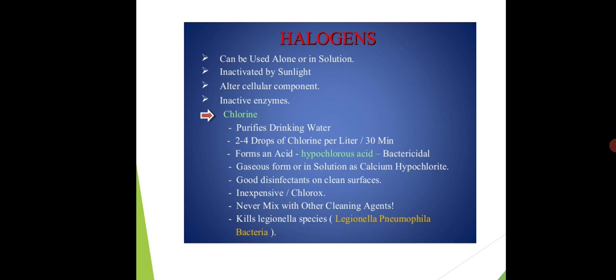Second is halogens. If we talk about halogens, it can be used singly or in solutions. It is inactivated by sunlight. It alters cellular component, means it changes the cell's component, changes function. Therefore, its activity will be inhibited or stopped. It inactivates the enzymes.